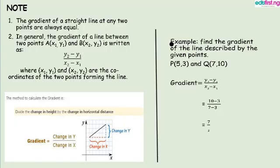Take note of the following. One, the gradient of a straight line at any two points are always equal. So what we are saying is that if you take point A and B, or you take point C and D, or you take point D and E, by the time you calculate the gradient, you are going to have the same value.